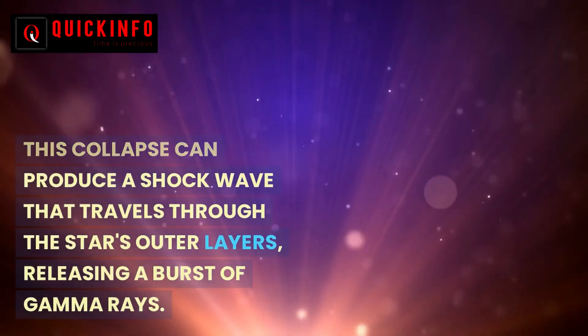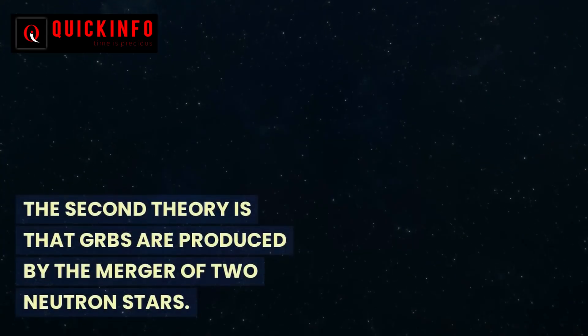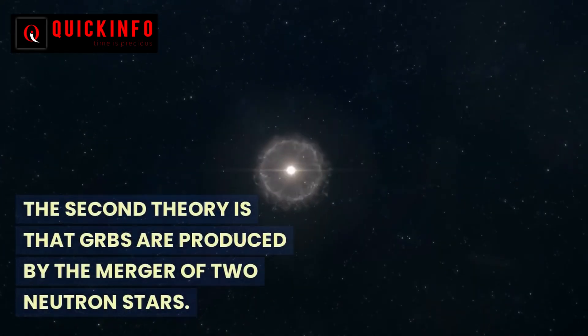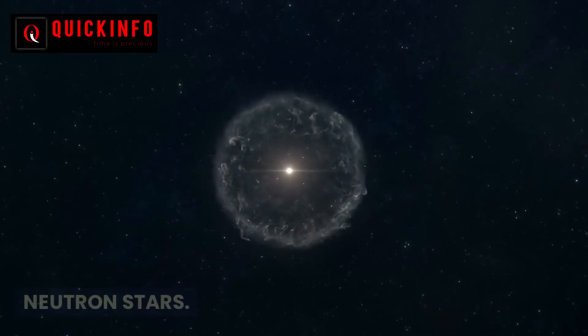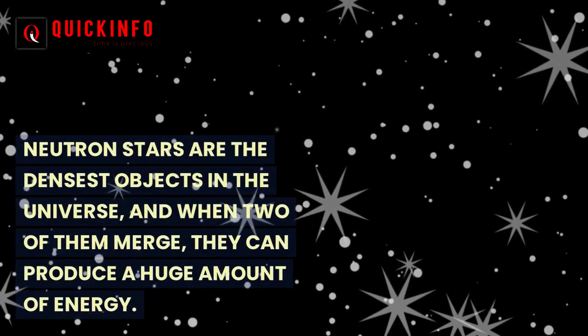The second theory is that GRBs are produced by the merger of two neutron stars. Neutron stars are the densest objects in the universe, and when two of them merge, they can produce a huge amount of energy. This energy can be released in the form of a gamma ray burst.